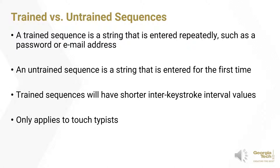The authors make a distinction between trained and untrained sequences, since keystroke timing attacks aim to exploit the time between two key clicks in order to infer information. A trained sequence is a string that is entered repeatedly, such as a password or an email address. An untrained sequence is any string that is entered for the first time, or very sparingly. Trained sequences will have shorter inter-keystroke interval values, as muscle memory kicks in due to the fact that the typist potentially types this string multiple times each day. Interestingly, only touch typists are vulnerable to keystroke timing attacks, since those who hunt and peck for keys will have large interval values compared to what an attacker would normally see.